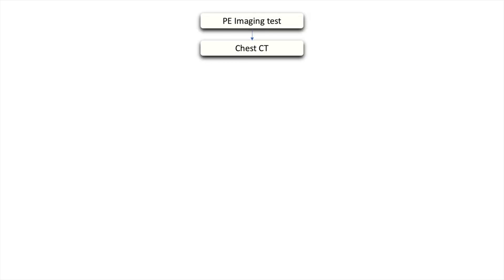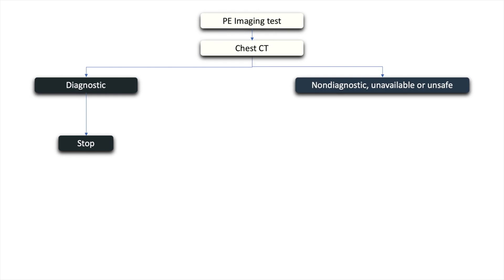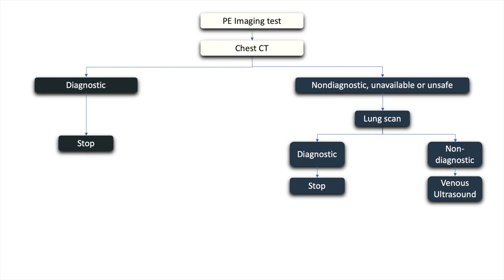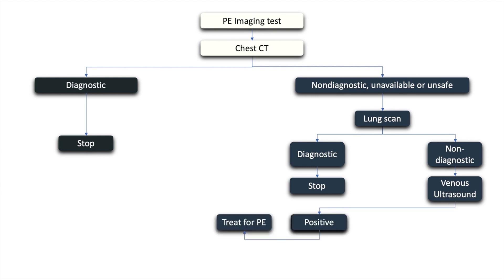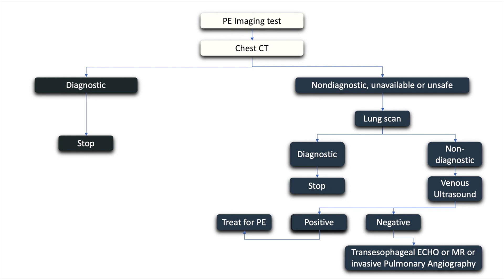A high D-dimer or a high clinical likelihood of pulmonary thromboembolism would require imaging tests. The imaging test of choice is chest CT. If it is non-diagnostic, unavailable, or unsafe, lung scanning may be considered. If lung scanning is not diagnostic, a venous ultrasound may be done. If positive, the patient warrants treatment for PTE. If negative, the patient can undergo transesophageal echocardiogram, magnetic resonance imaging, or invasive pulmonary angiography.